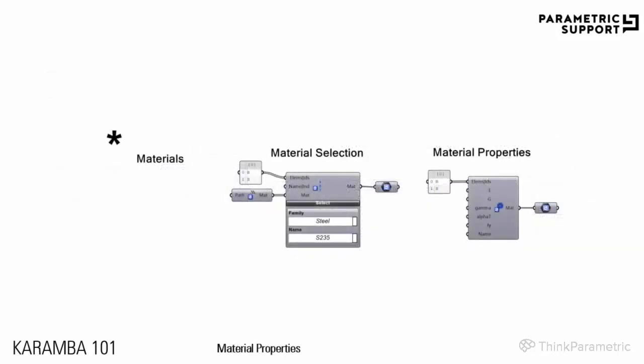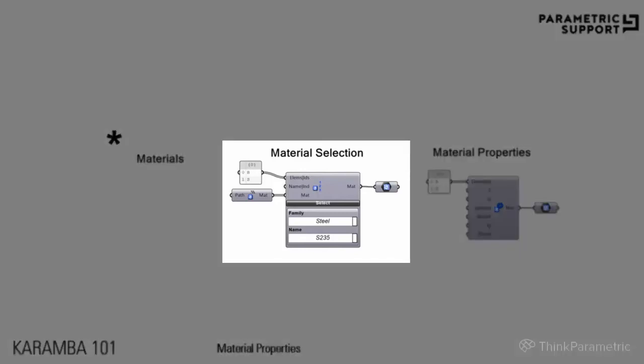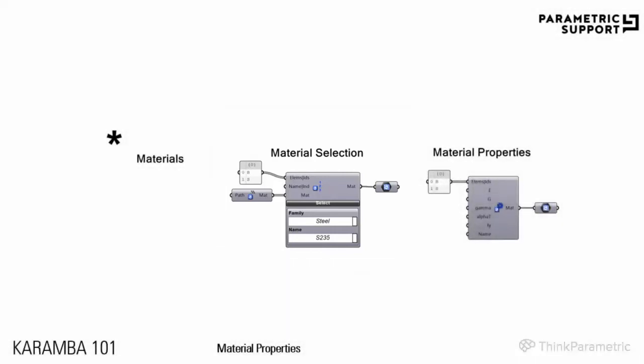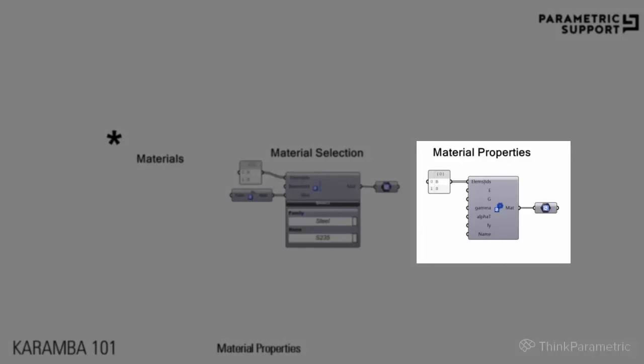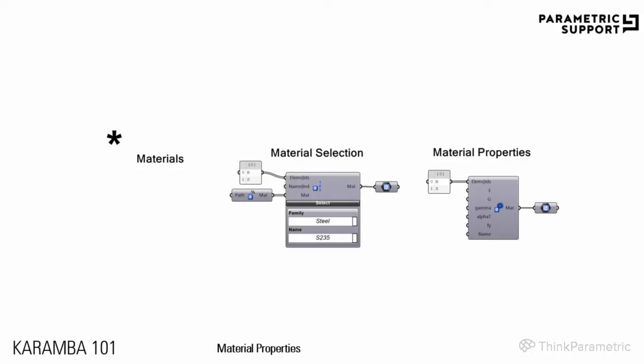You can also assign materials, which is optional. If no material is assigned, steel is used as default. If you want to define your own material, you can do this in two ways: first, select a material from the table provided when Karamba is installed; second, use the material properties component where you specify the physical properties to create a custom material for your Karamba model.